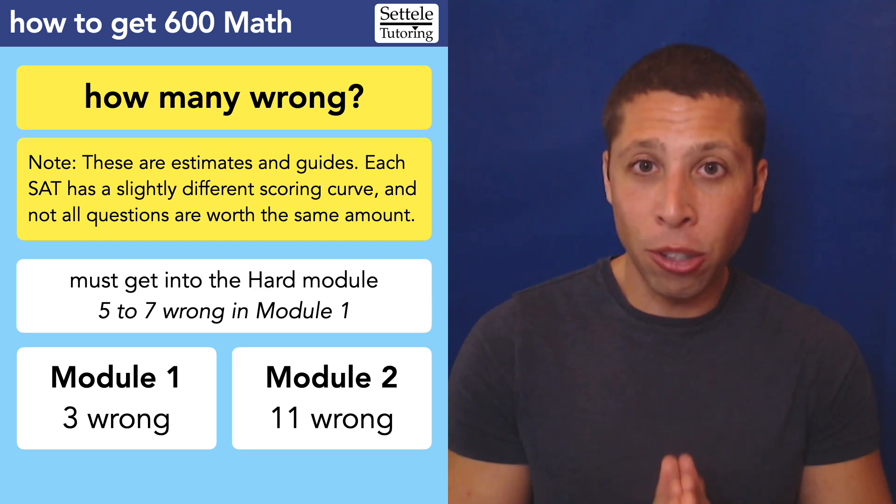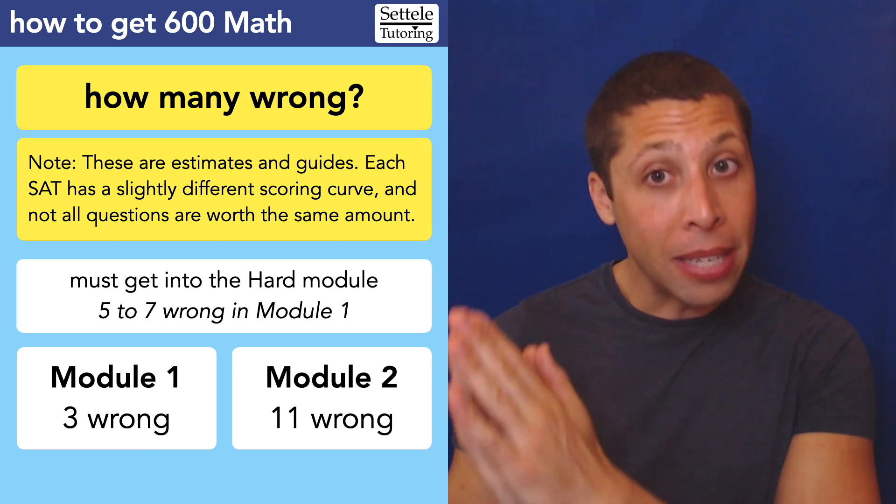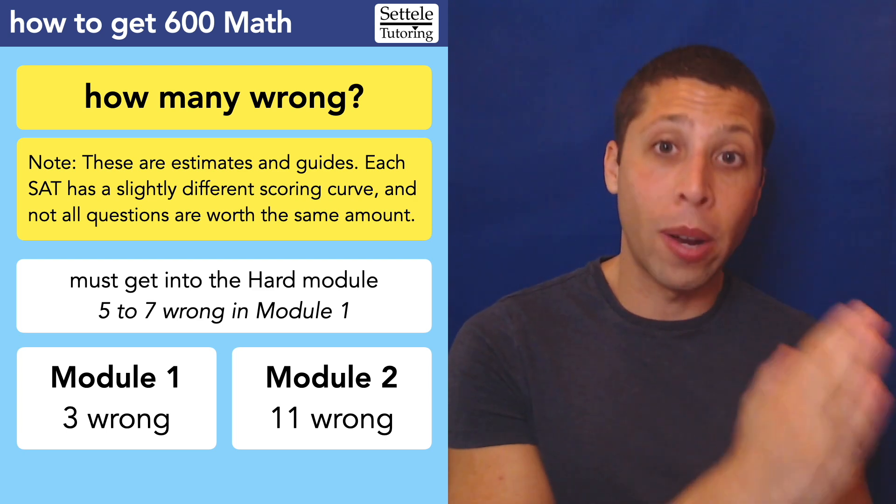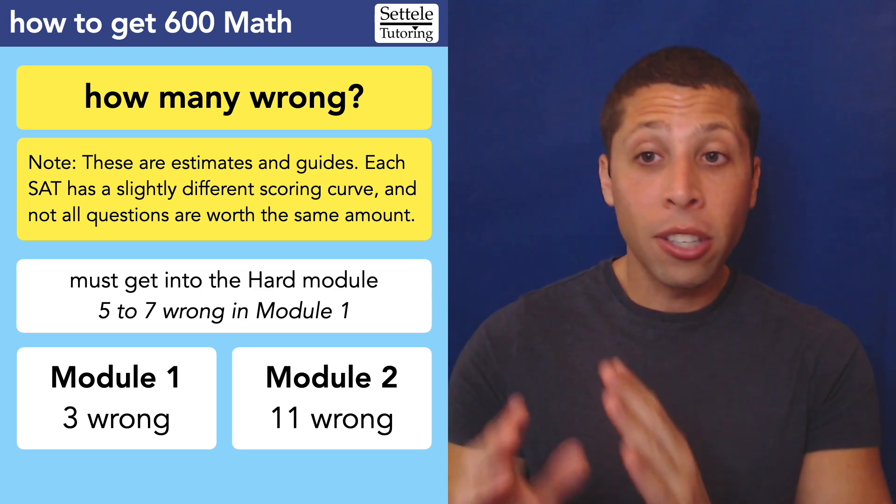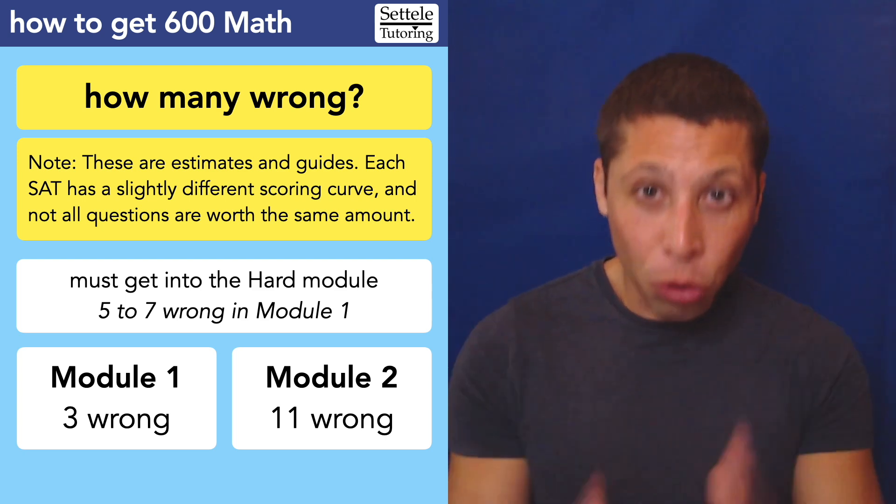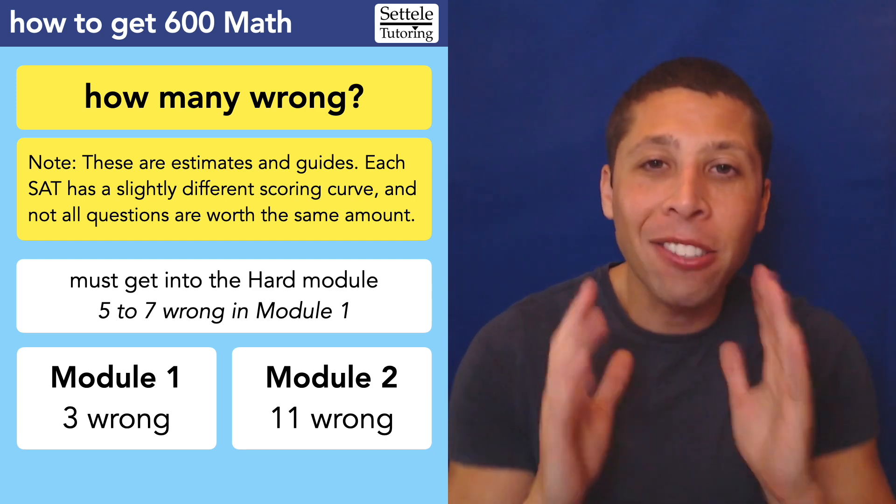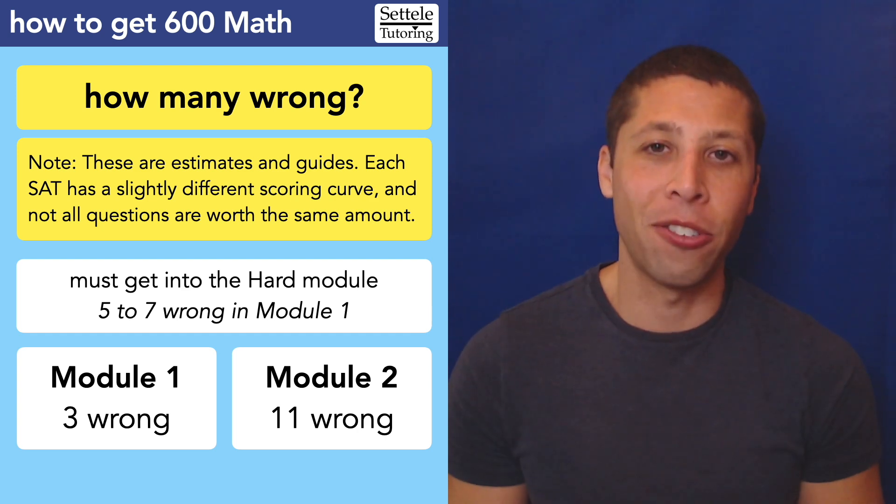So just keep that in mind. And remember, in the math modules, the questions are organized by difficulty. So the easier questions are at the beginning of the module and the harder questions are at the end. So honestly here, just go up to number 15, do one through 15 and make sure that all of those are right. And then just guess randomly for everything after that. That's fine. You can still get a 600 in math that way.